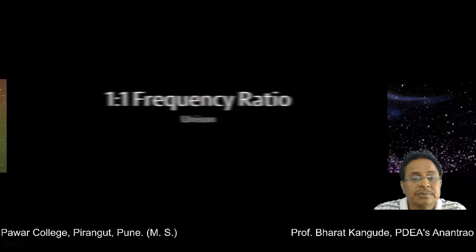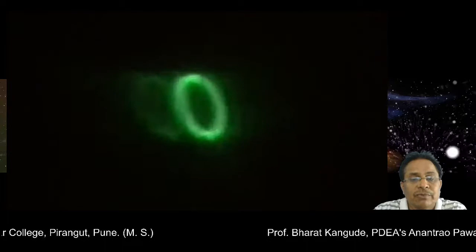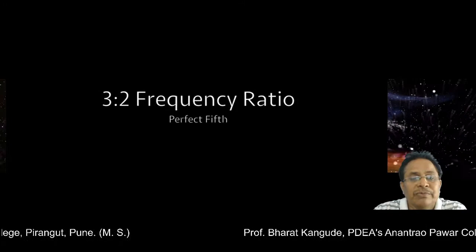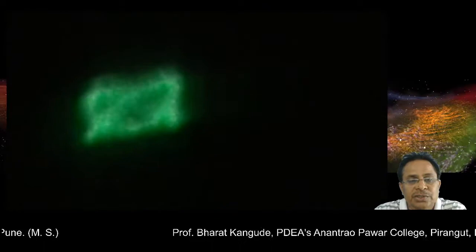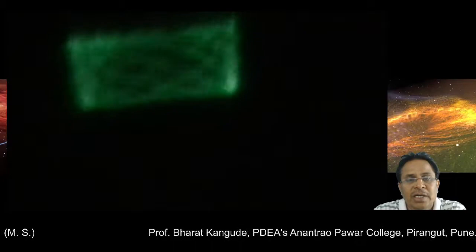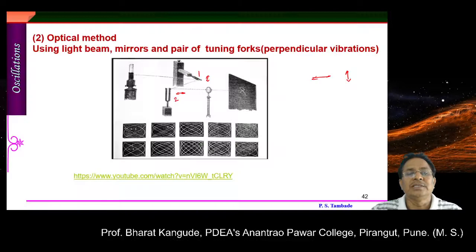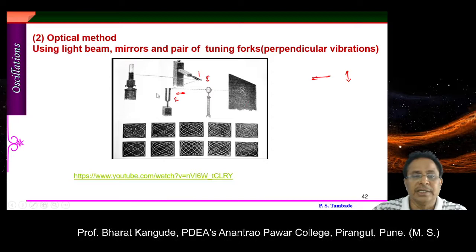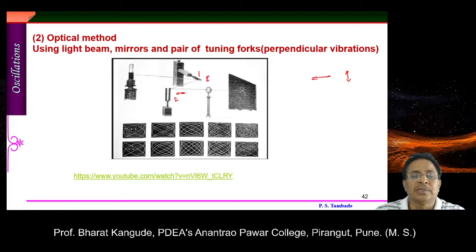In a YouTube demonstration, with frequency ratio 1:1, two tuning forks are plucked and certain figures are generated on screen. When the frequency ratio is changed to 3:2, different figures appear; at 4:3, yet another set of figures is produced. A simple laser is used, and by maintaining different frequency ratios the corresponding Lissajous figures appear on screen. This is the practical method with which one can generate such diagrams using both the electrical and optical methods.